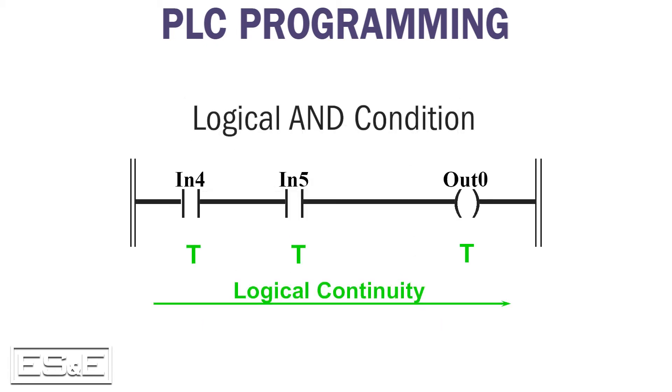This rung uses the logical AND condition. It shows both input four and input five conditions as true, so output zero is on. Several input conditions can be arranged in a series and if all solve true, then of course the output is on.